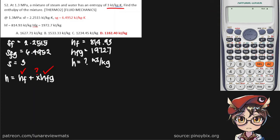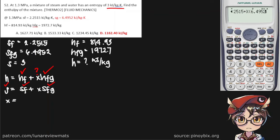There is enough information to find the quality if you look at the entropy values — it has a similar equation: S = Sf + x·Sfg. We already have our S, our Sf, and our Sfg, so we can find our quality X. Putting that into the calculator — solving for X — we get a value of 0.1152 as our steam quality.